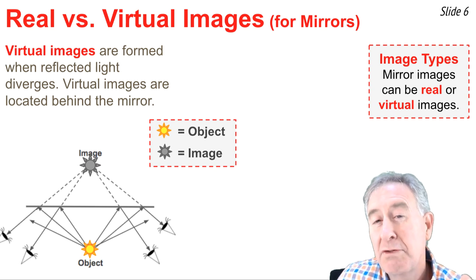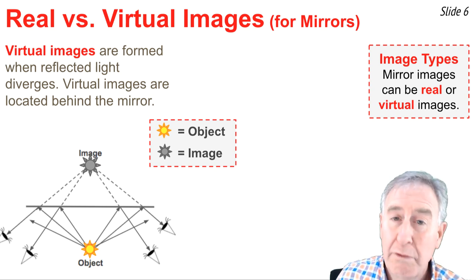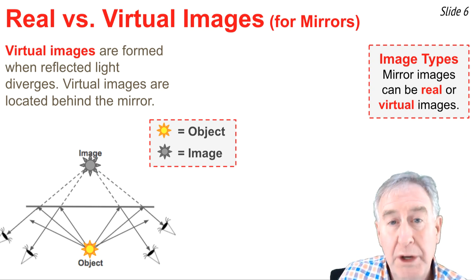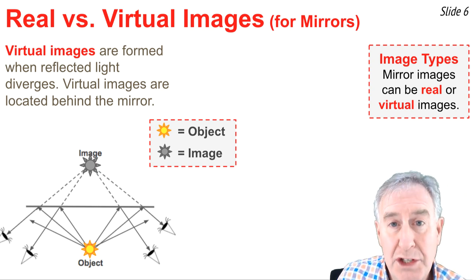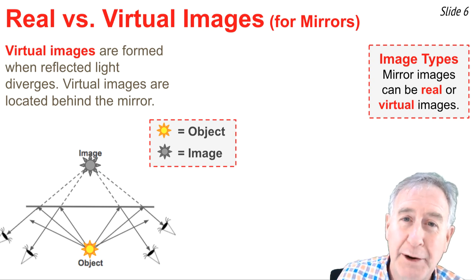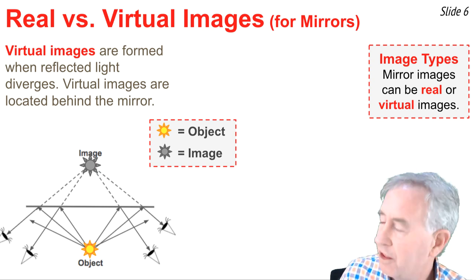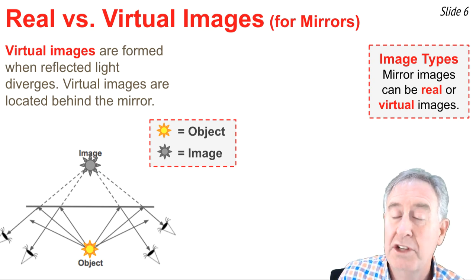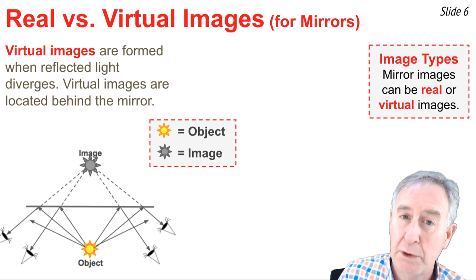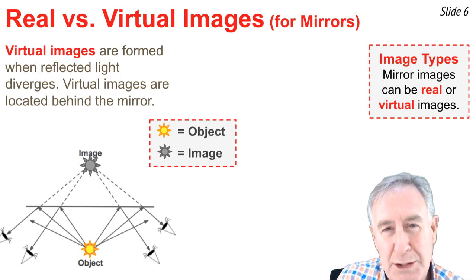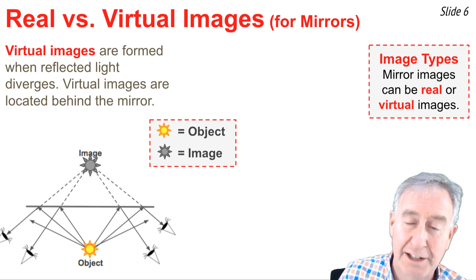The images formed by mirrors can be real or virtual. Virtual images are always formed by plane mirrors. They're formed whenever the reflected light diverges after reflecting off of the mirror. Because the light diverges, the image location is not on the object side of the mirror. Instead, you must extend those reflected rays backwards to an intersection point behind the mirror. Virtual images are always located behind the mirror.